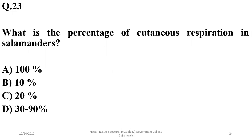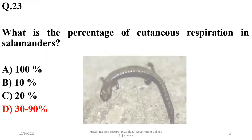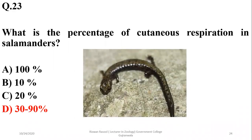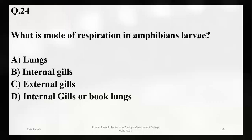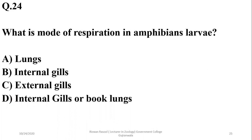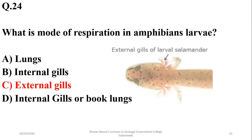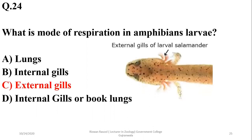The percentage of cutaneous respiration in salamanders is almost 30 to 90 percent — most gas exchange generally takes place along their skin. What is the mode of respiration in amphibian larvae? Amphibian larvae have external gills, and these external gills modify into lungs as they metamorphose into adults.